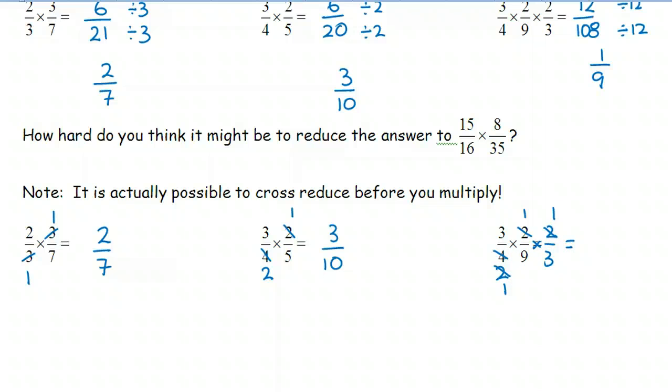It doesn't matter which one you actually cross-reduce with as long as you only cross-reduce with one of them. So here we'll cross-reduce the three with the nine. Both of these divide by three. And so now if we multiply the numerators together, one times one times one makes one, and one times three times three makes nine.